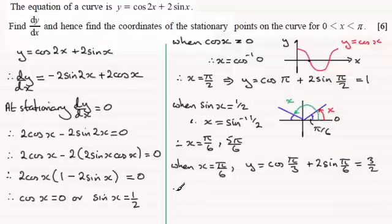The other one is to look at when x equals 5π upon 6. And if you do the same again, just substitute those values into here, you should find you again get 1 and a half, 3 over 2.